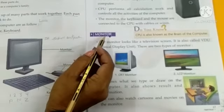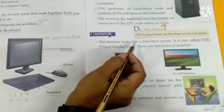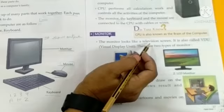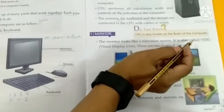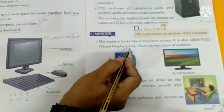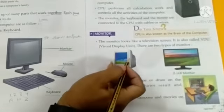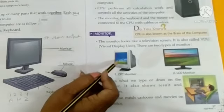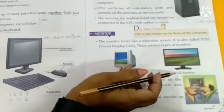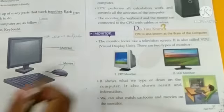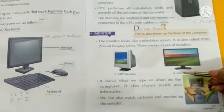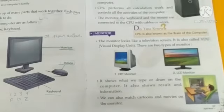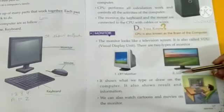Next, monitor. M-O-N-I-T-O-R. The monitor looks like a television screen. Monitor television screen की तरह दिखता है. It is also called VDU — Visual Display Unit. There are two types of monitors: first is CRT monitor and second is LCD monitor. CRT monitor वक्त पहले आपने देखे होंगे, monitor back side से काफी heavy हुआ करते थे. LCD में एक पतले सी screen होती है जिसके back side में flat होता है.